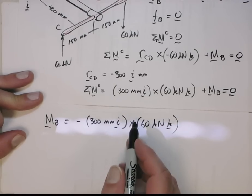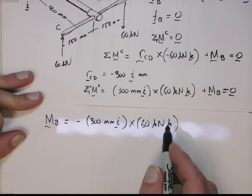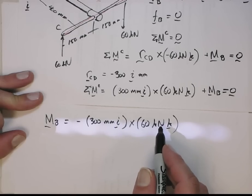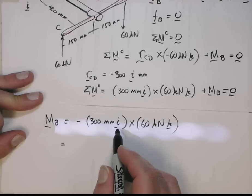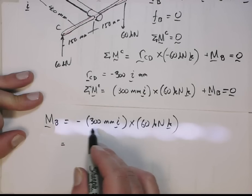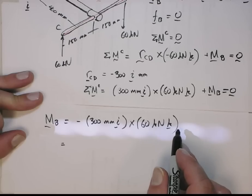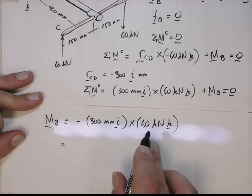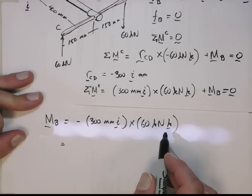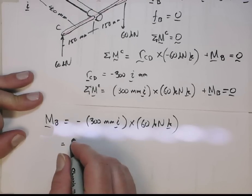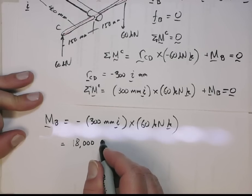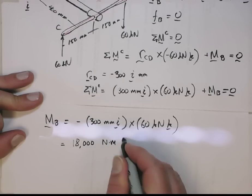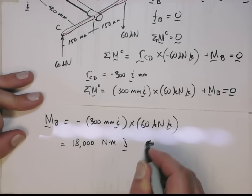Alright. When we do the cross product, well, let's deal with the units first. You got millimeters and kilonewtons, so a kilonewton millimeter is a newton meter. Alright. When we do the cross product, the scalars multiply and then you do the cross on just the unit vectors. So i cross k is a minus j and that now gives us a minus and a minus. That becomes a positive. So we get 18,000 newton meters in the j direction. Okay. So that is the internal moment.